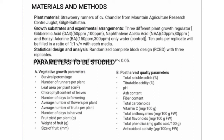Now we will discuss the parameters to be studied in my research. The runner production and yield parameters include: survival percentage, number of runners per plant, number of plants on each runner, leaf area per plant, chlorophyll content of leaf including chlorophyll A and chlorophyll B, number of days to flowering, average number of flowers per plant, average number of fruits per plant, number of days to harvest, yield per plant, weight of fruit, and size of fruit.